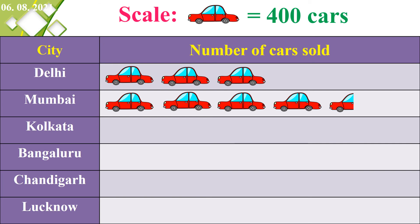Next, Kolkata sold 800 cars. 800 divided by 400 equals 2, so we draw 2 cars only.